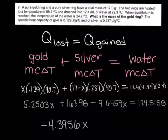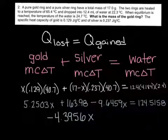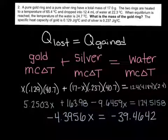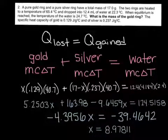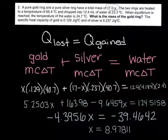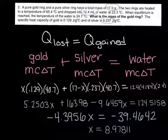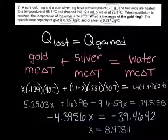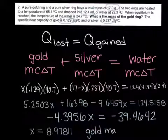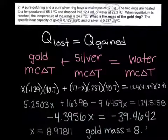Subtracting the x's gives me negative 4.3956x. And then subtracting the 163.98 from both sides gives me negative 39.4642. To solve for x, I would divide both sides by the negative 4.3956. When I do that, I get that x has a value of 8.97811. That should be the value of the mass of gold in grams. I want to go back and figure out how many significant digits I need in my answer. I have 17.0 grams with 3 sig figs, 12.4 milliliters with 3 sig figs. Each of my specific heat capacities has 3 sig figs, so my final answer should have 3 significant digits. So the gold mass should equal 8.98 grams.